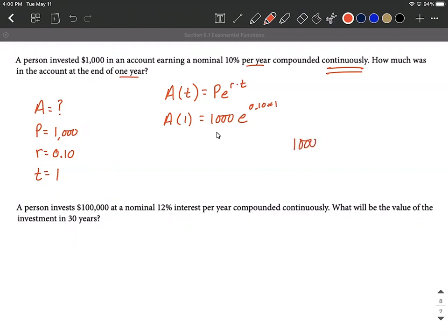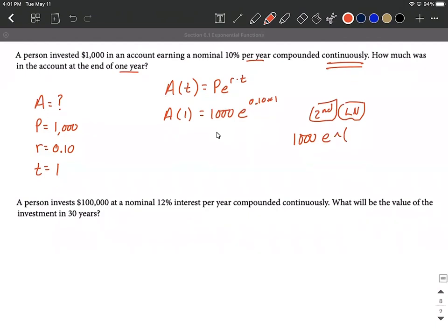Now to get this into our calculator, I would put this in as a thousand. And then I need e to come up. So go second, then the LN button. And then that's going to bring up, well, my calculator looks like e to a power and starts a set of parentheses. I would put the 0.10 multiplied by one and close off my parentheses. Again, yours may look slightly different based on whatever calculator model you're using.